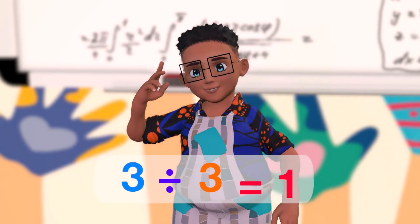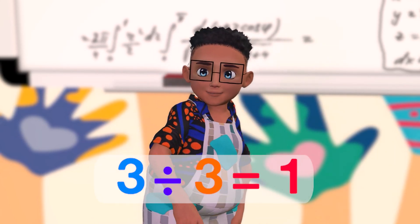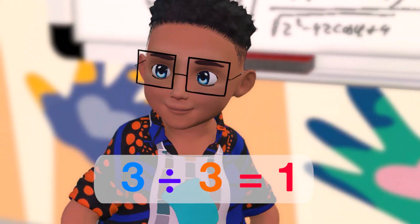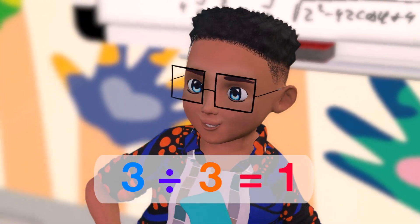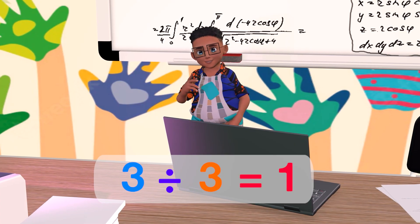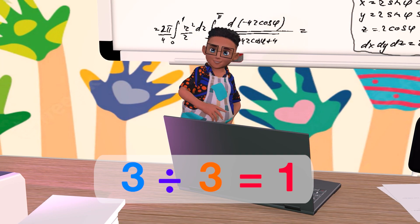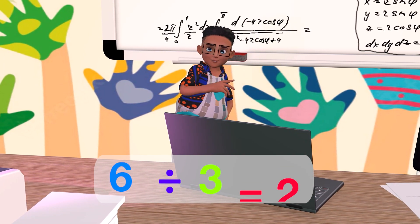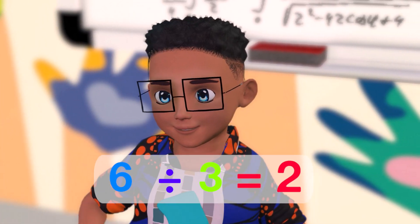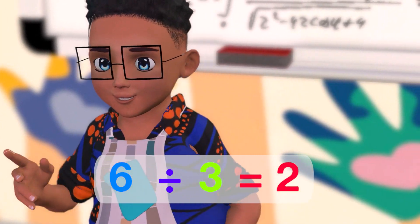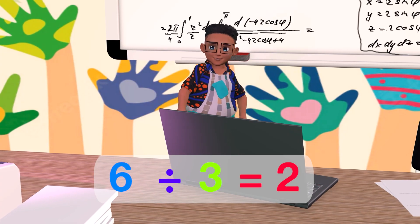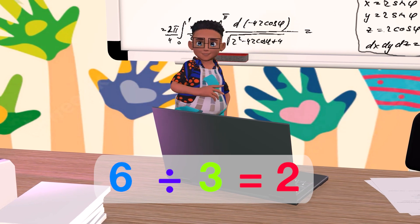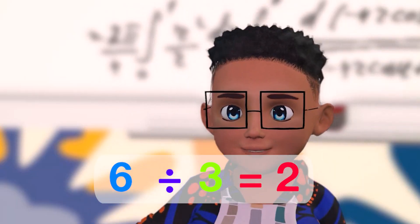3 over 3 is 1. 3 divided by 3 is 1. 6 over 3 is 2. 6 divided by 3 is 2.